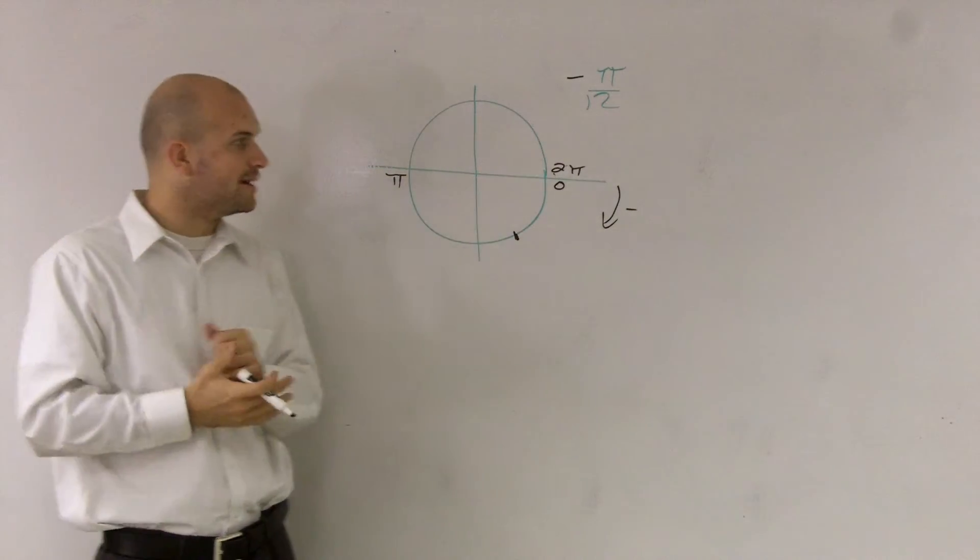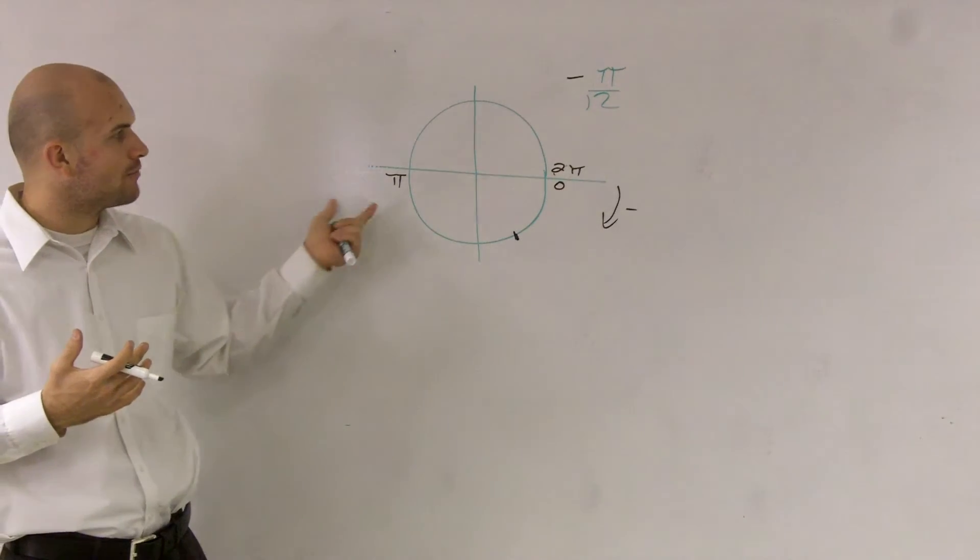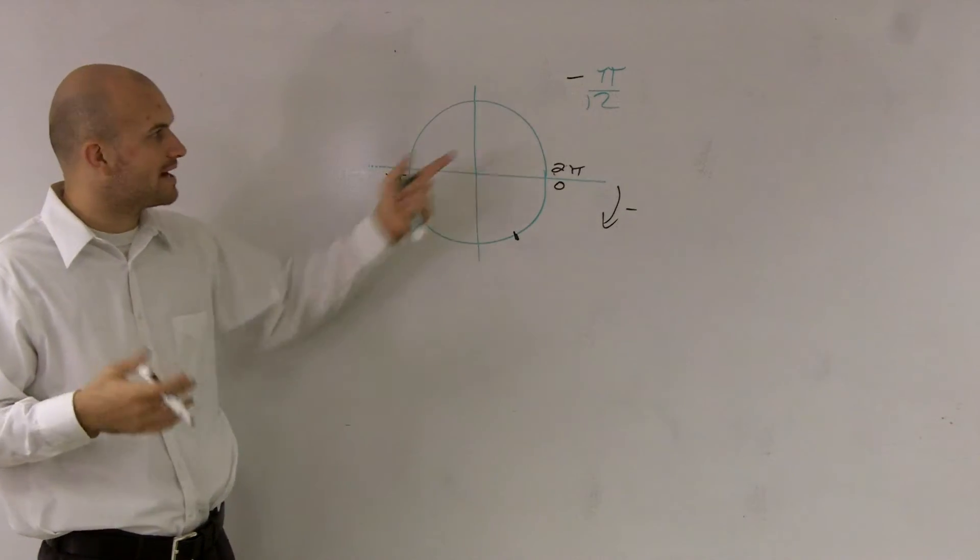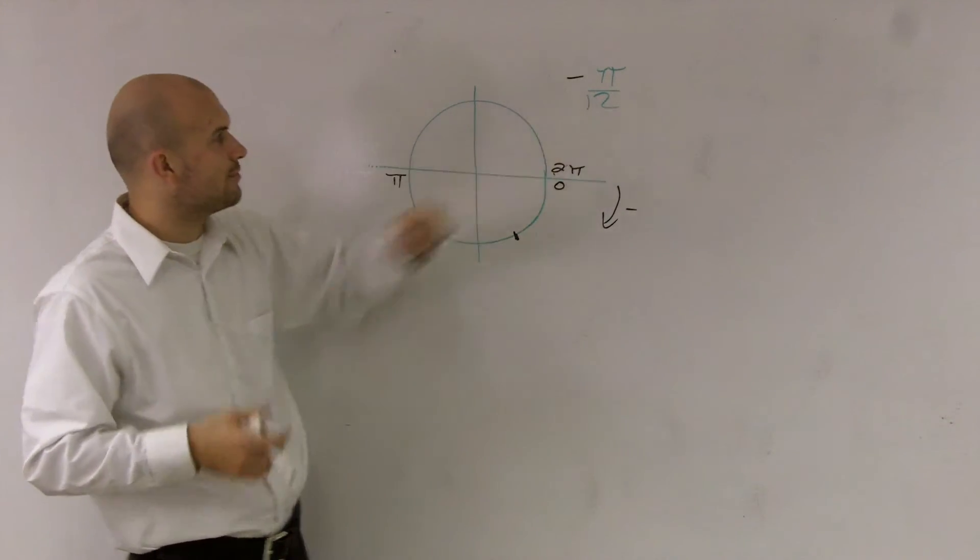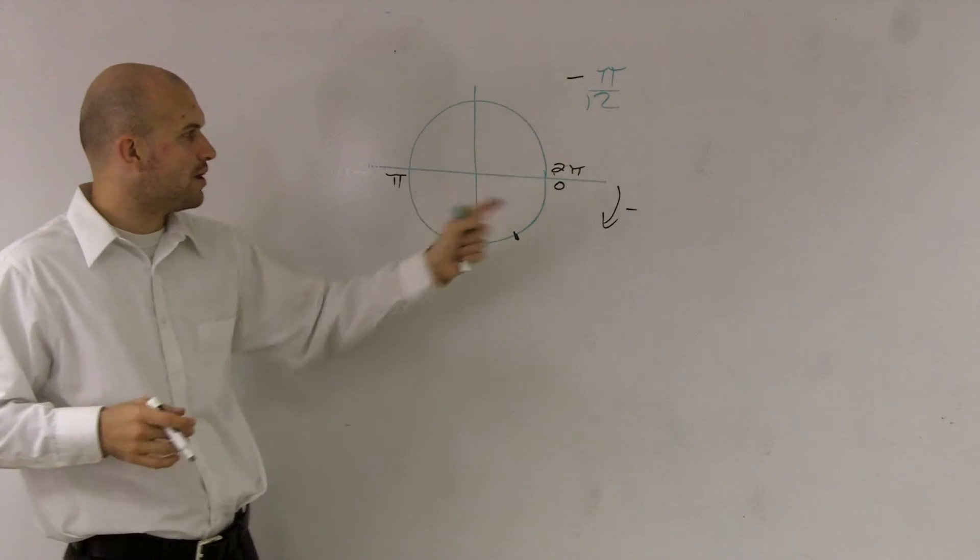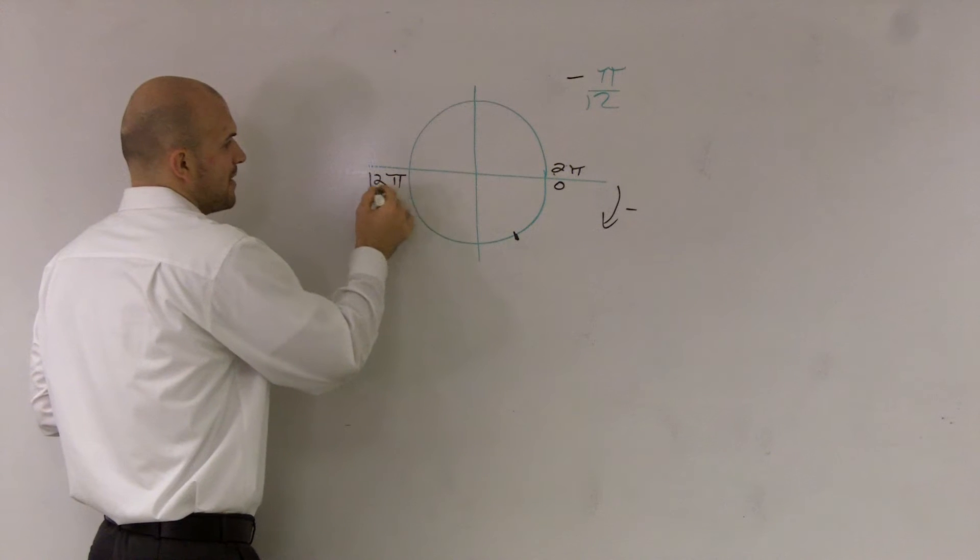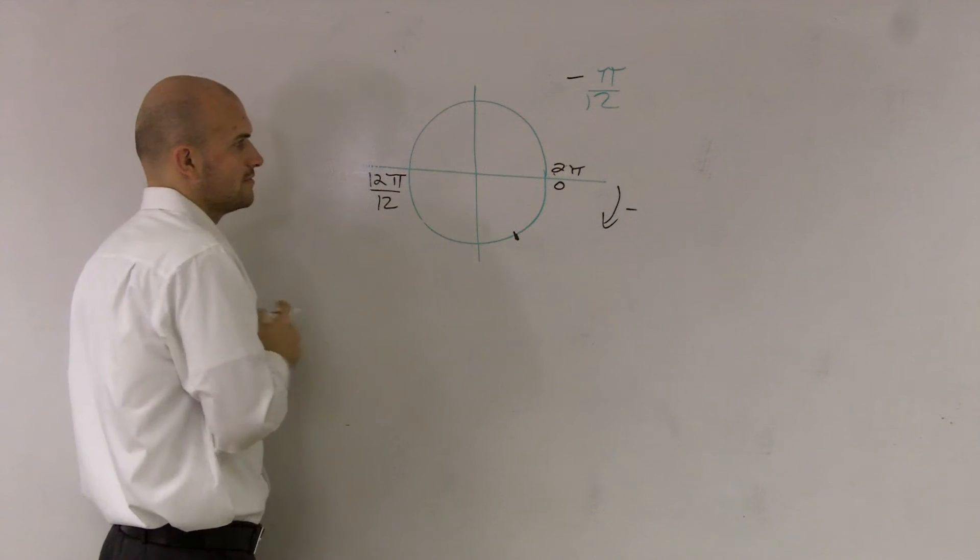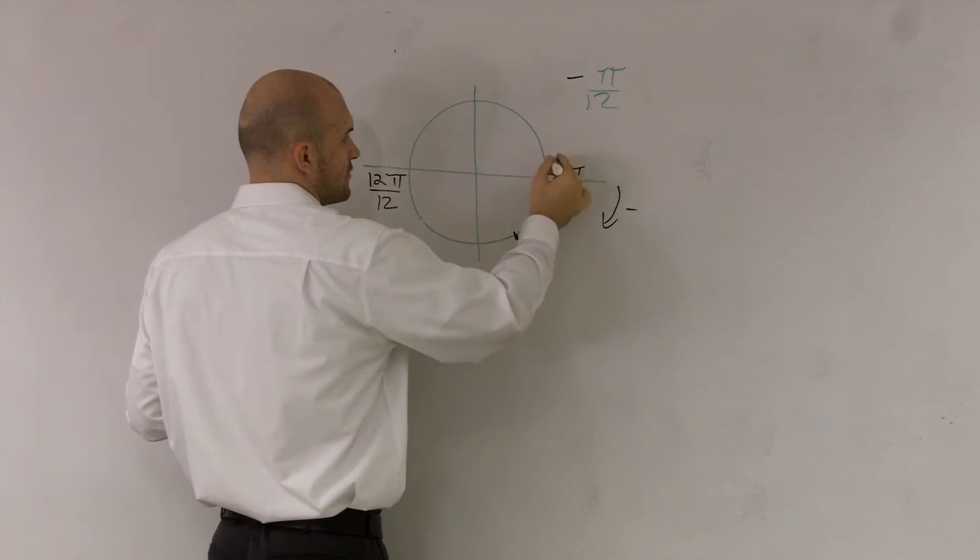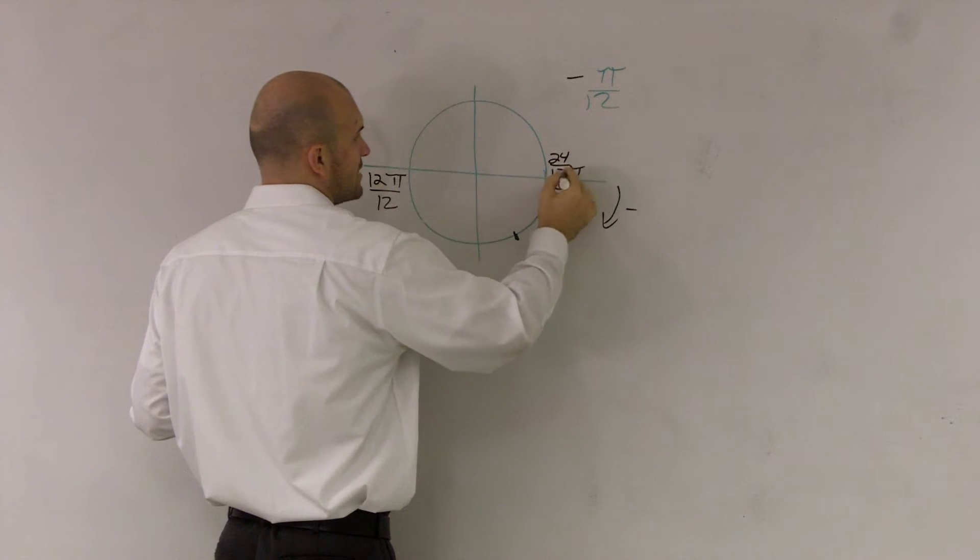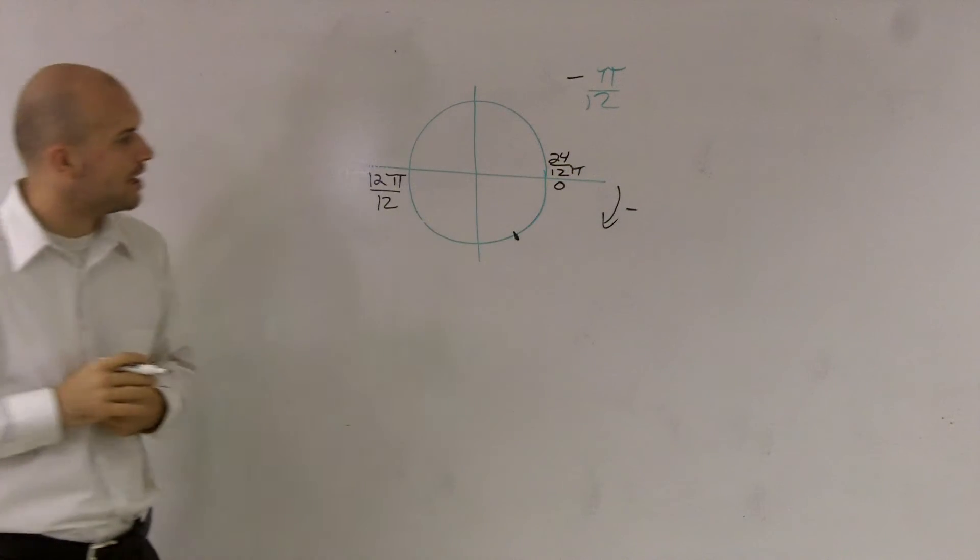So what we need to do is we need to represent everything in terms of π. So what I'm going to do is, since I'm using π over 12, I'm going to put this in terms of π over 12. So I'm going to represent π as 12π over 12, and 2π can be represented as 24π over 12.